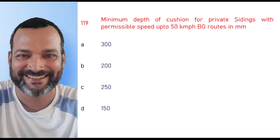Minimum depth of cushion for private sidings with permissible speed up to 50 kmph on BG routes in main line is 350 mm.